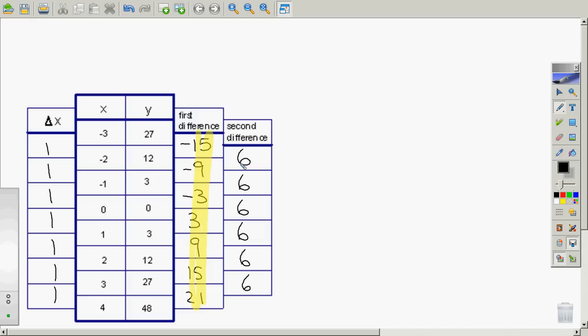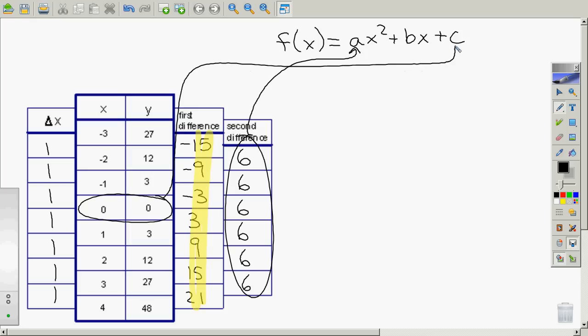So from what we learned yesterday, we know a standard form quadratic is ax squared plus bx plus c. And we know there's a connection between this second difference and the a. And we know there's a connection between the initial value and the c.